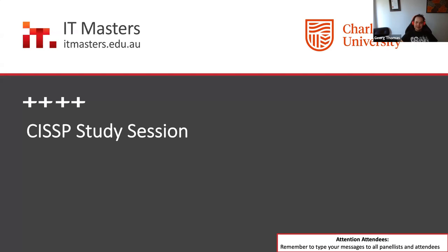We've got quite a lot of content to get through, as some of you pointed out in the discussion forums. Given that we have eight domains in the CISSP and only four evenings to get through it, there's quite a bit. Tonight we're going to look at Domain 2 and Domain 3 — Domain 2 being Asset Security, and Domain 3 being Security Architecture and Engineering.